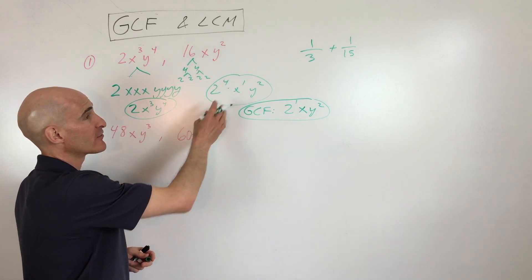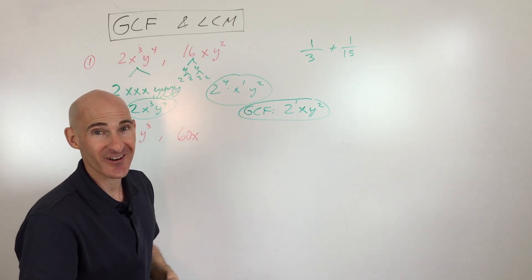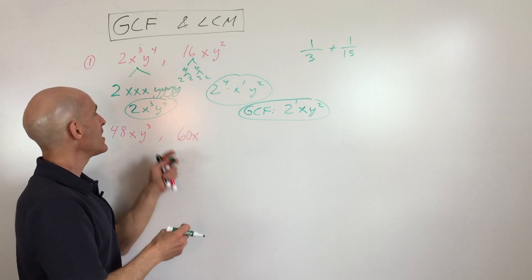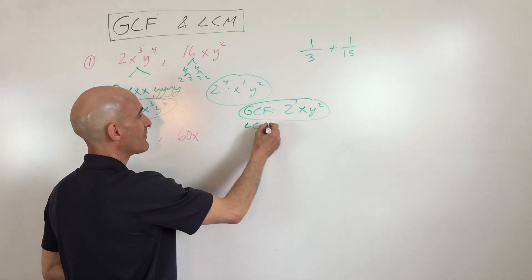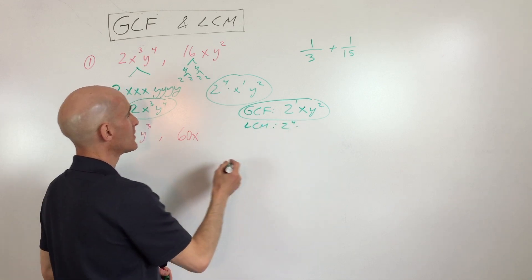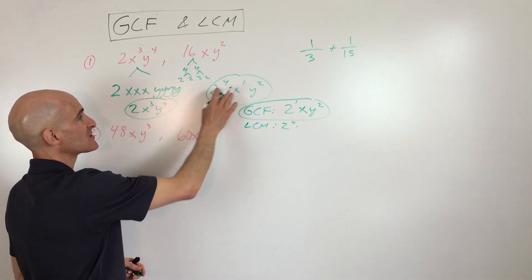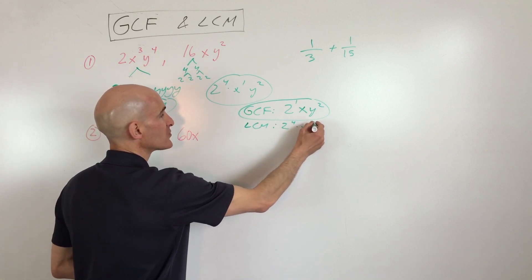what you actually do is you take whatever occurs the most. So it's the opposite, it's ironic. So here we have 1 two, here we have 4 twos. So for our least common multiple, we're actually going to need 4 twos. Here we've got 3 x's, 1 x. We're going to need the one that occurs the most, 3.